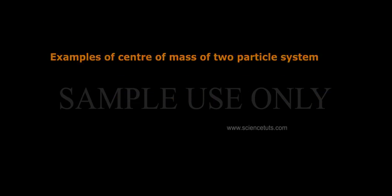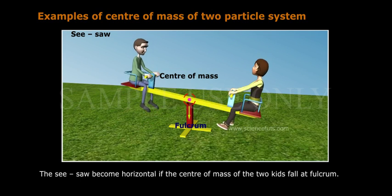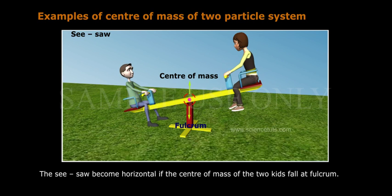Examples of center of mass of a two-particle system. The seesaw becomes horizontal if the center of mass of the two kids falls at the fulcrum.